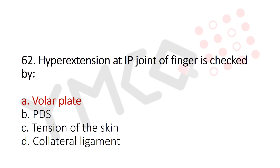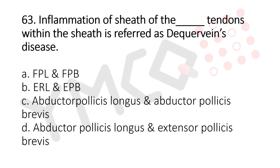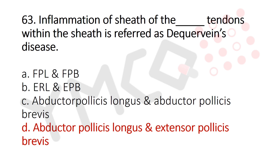Question 63: Inflammation of the sheath of which tendon within its sheath is referred to as De Quervain's disease? Option A: FPL and FPB, Option B: EPL and EPB, Option C: abductor pollicis longus and abductor pollicis brevis, Option D: abductor pollicis longus and extensor pollicis brevis. The answer is Option D, abductor pollicis longus and extensor pollicis brevis.